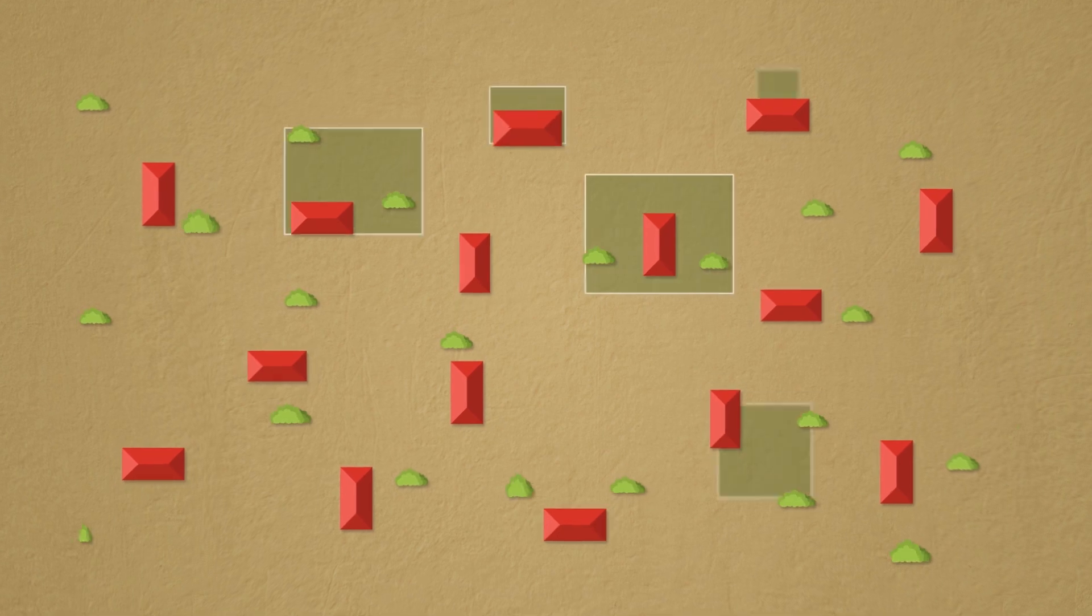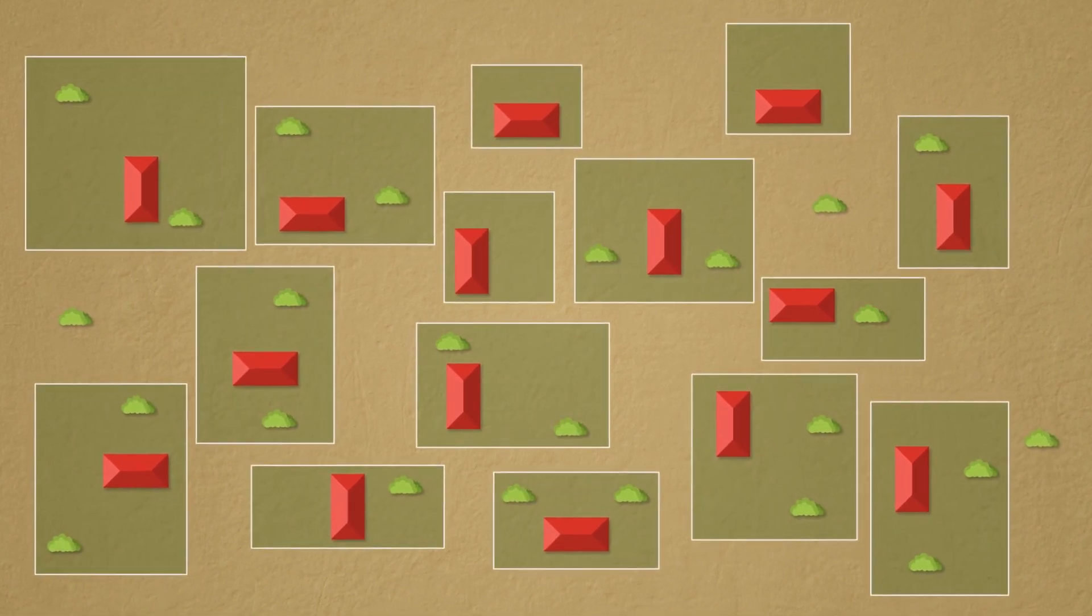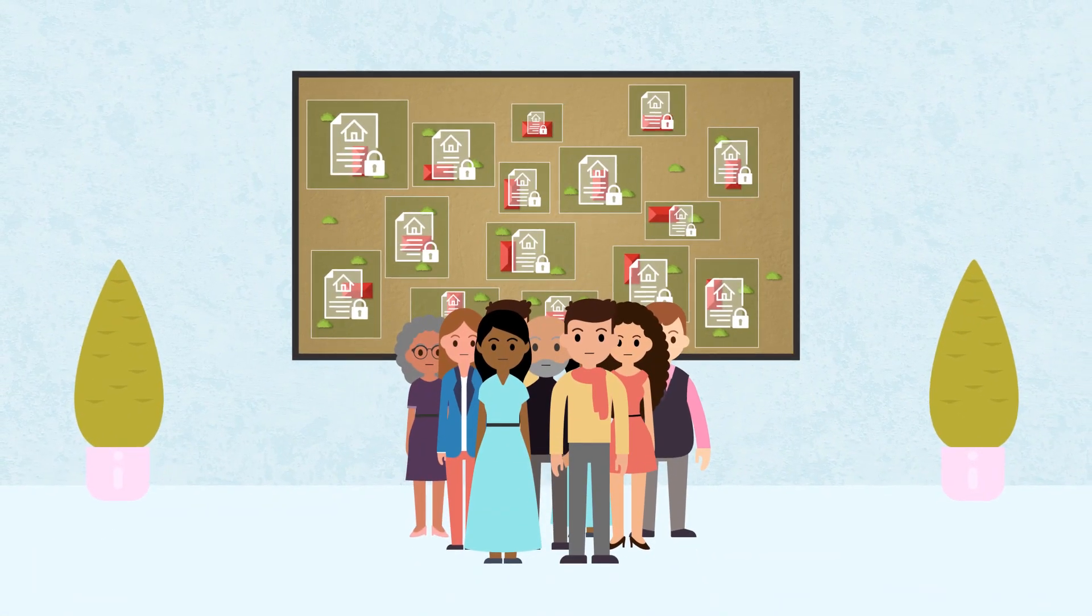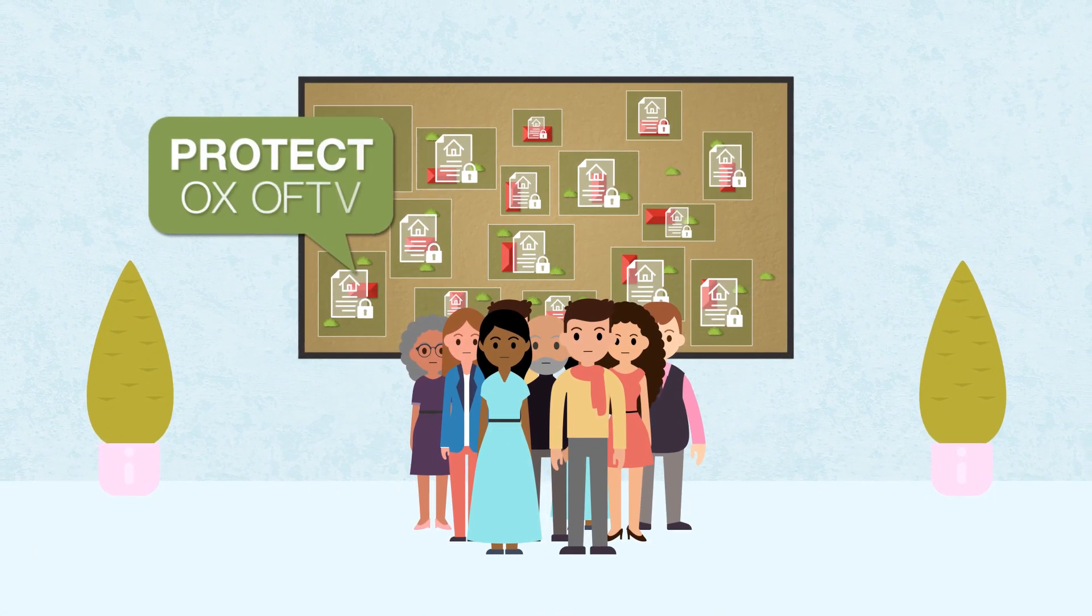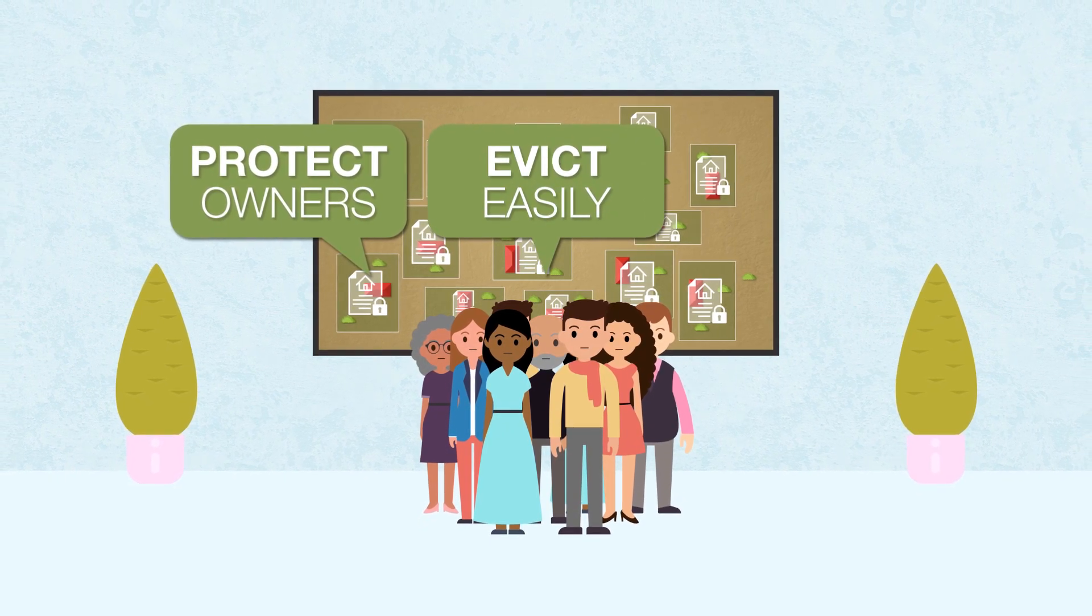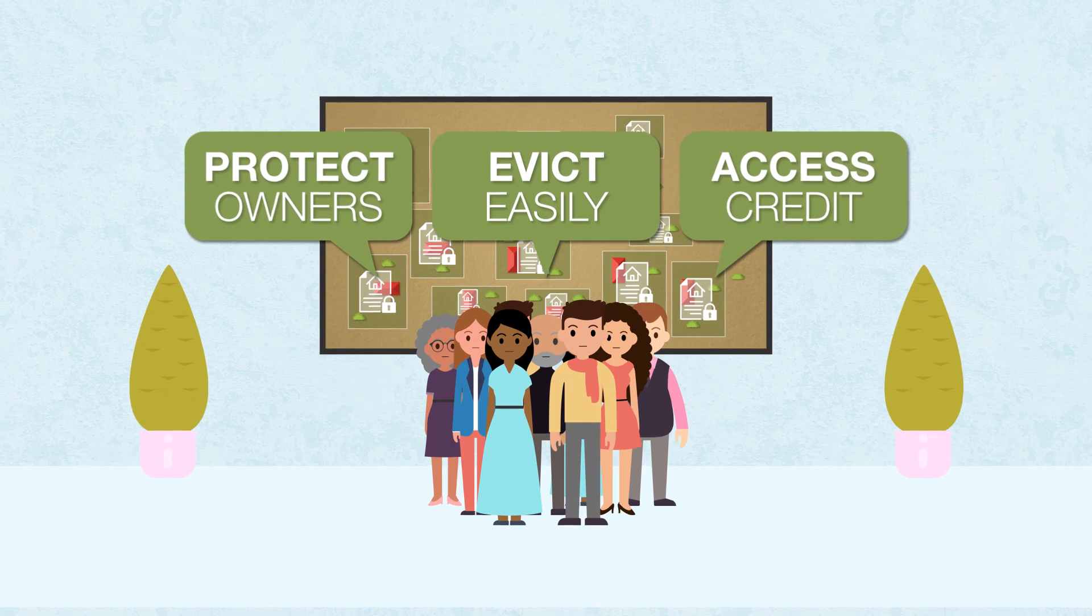Across the globe, land titling programs have been promoted as a powerful poverty reduction tool. Proponents argue that these programs protect owners against expropriation, facilitate the eviction of defaulting tenants, and make credit more accessible.